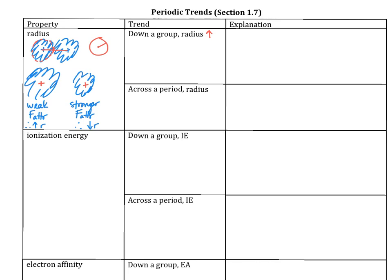Let's consider lithium in Group 1, with 3 protons and electrons distributed 2 and 1 in the first and second shells. Then consider potassium in Period 4, Group 1 — 19 protons, with electrons distributed 2, 8, 8, and 1. When considering the radius of any particle — atoms or ions — we first look at the number of shells, then the nuclear charge, and if both of those don't give us the answer, we look at the electrons.